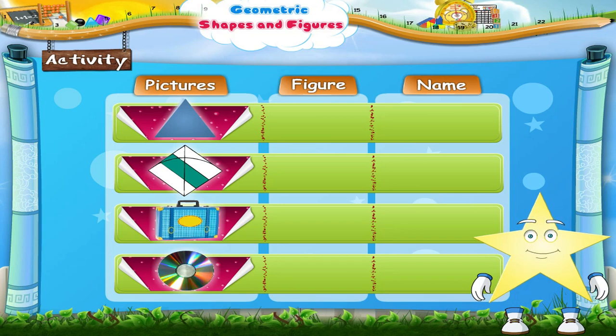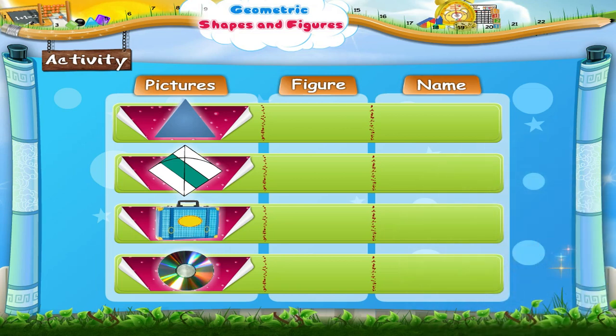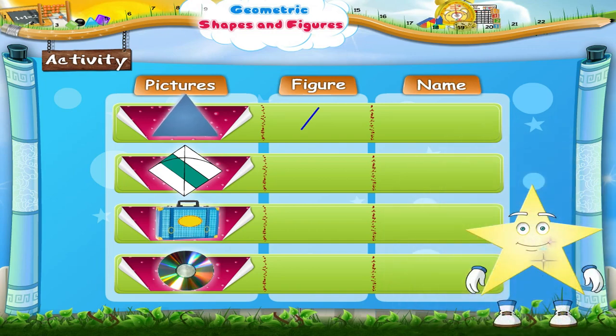Starry! Now draw the figure and write the name for that figure in the columns. Starry, let's begin. First, the figure and then the name in the column.